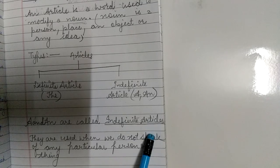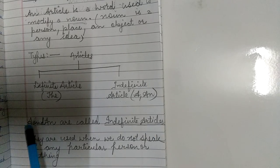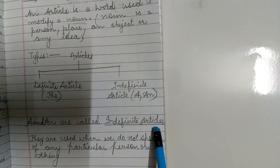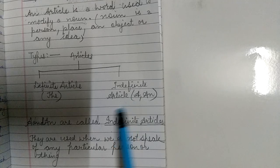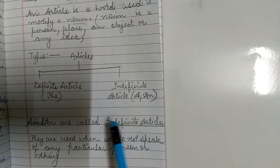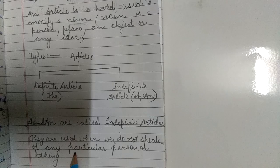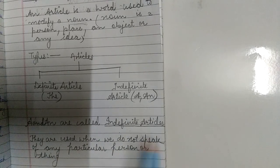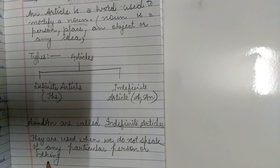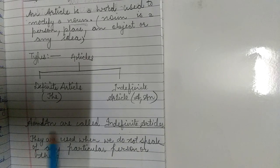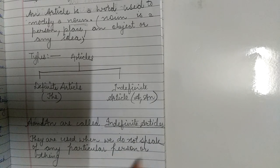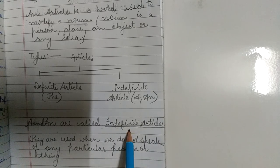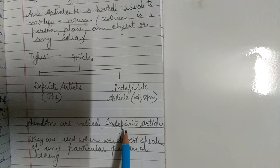In indefinite articles, you all know that there are two words: 'a' and 'an'. What is the meaning of indefinite articles? Indefinite here means which is not definite, which is not particular or not specific. They are used when we do not speak of any particular person or thing.